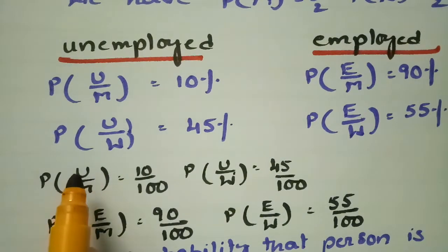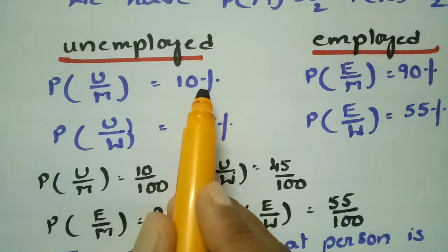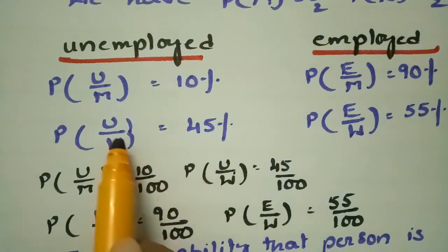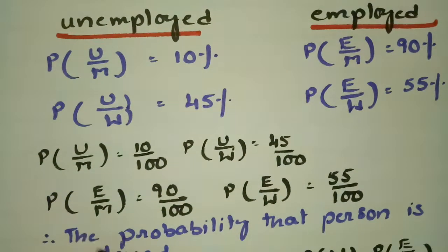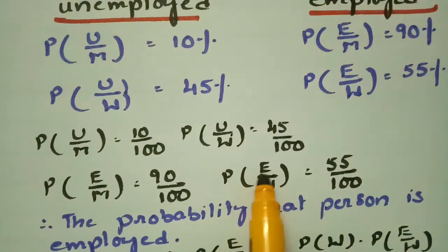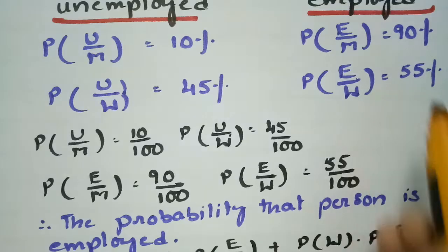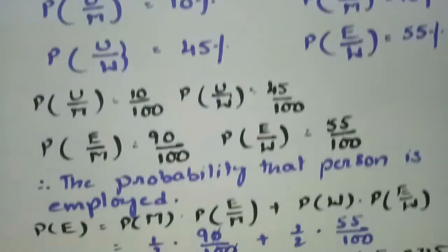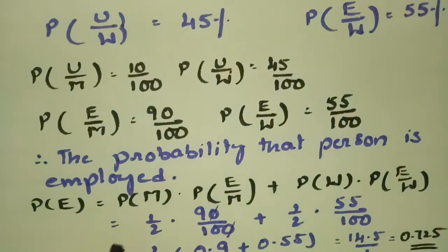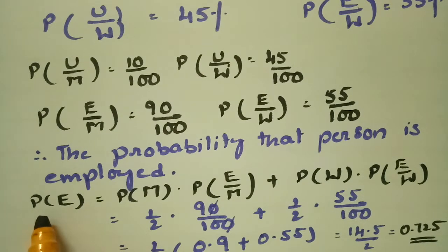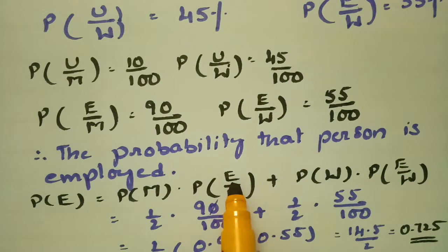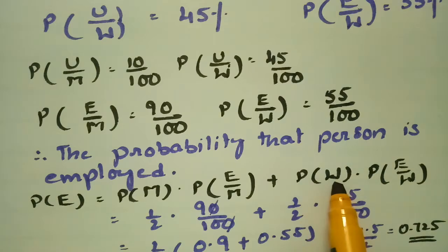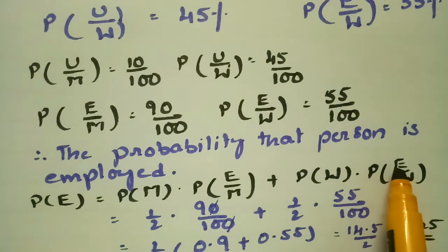The probability of unemployed men is 10/100 and unemployed women is 45/100. The employed men is 90/100 and employed women is 55/100. The probability that the person is employed equals the probability of men times the probability of men who are employed, plus the probability of women times the probability of women who are employed.